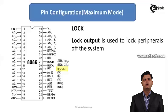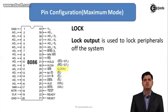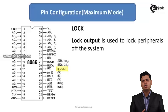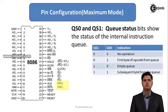The LOCK output signal is used to lock the peripherals of the system. Whenever we do not want a peripheral to get service from the processor, the lock output signal is used. When the lock output pin becomes 1, none of the peripherals can access the 8086 — they are locked.